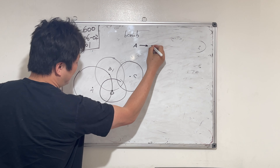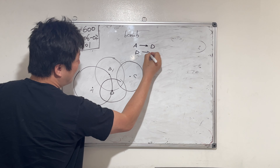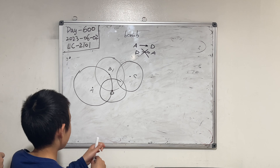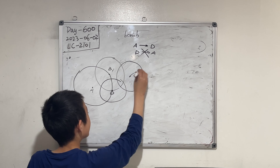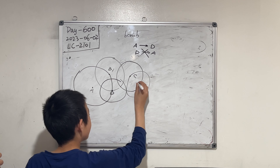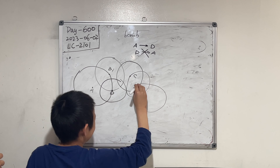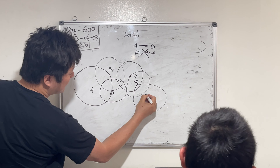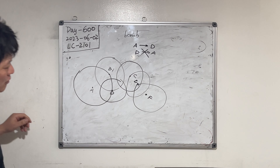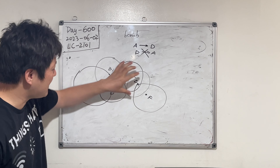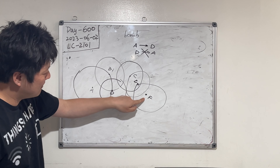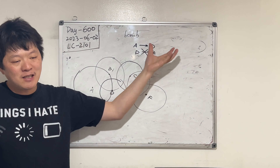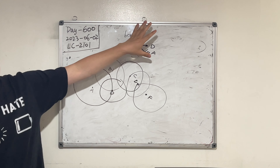You see, A can ignite D, but D cannot ignite A. And we also have E and F — F ignites E, but E cannot ignite F. However, E can ignite C. So what kind of problem is this, and what kind of data structure can we think about?